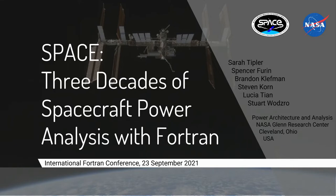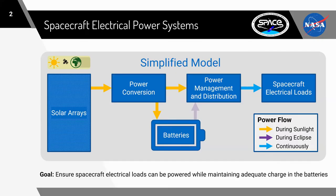I get to share this work with you today as an example of Fortran being applied to engineering problems. Power needs to be reliable when it comes to power systems, because here on Earth, when you plug our electronic devices into the wall, we don't usually question whether we'll have access to the power that they need to work. Well, in space, it's another matter entirely. For our spaceflight vehicles, power is a vital and limited commodity.